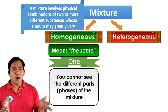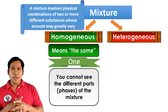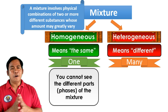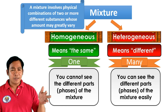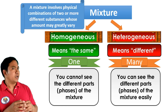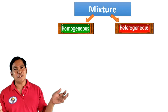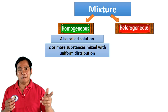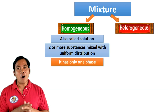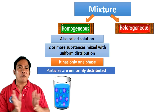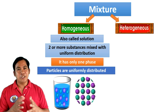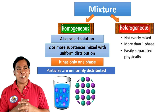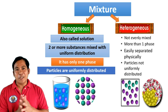In homogeneous mixtures, you cannot see the different parts of the mixture — it appears as one phase. In heterogeneous mixtures, meaning different, you can easily see the different parts of the mixture. Homogeneous mixtures, also called solutions, have two or more substances mixed with uniform distribution and only one phase, with particles uniformly distributed. Heterogeneous mixtures are not evenly mixed, have more than one phase, are easily separated physically, and have non-uniformly distributed particles.